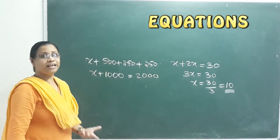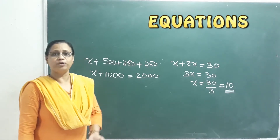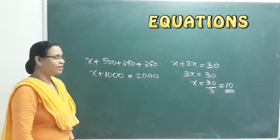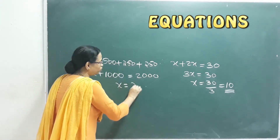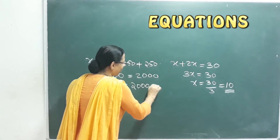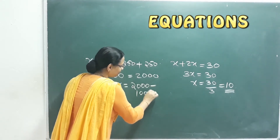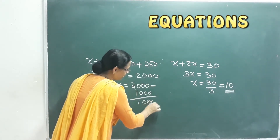The total in the bank is 2000 rupees. That's why the bank amount is 100 rupees. x is equal to 2000 minus 1000, that means 1000 rupees.